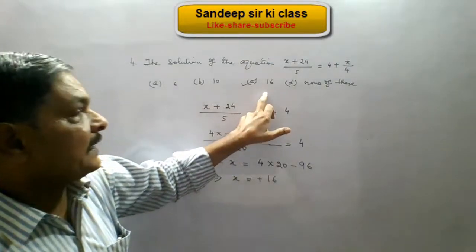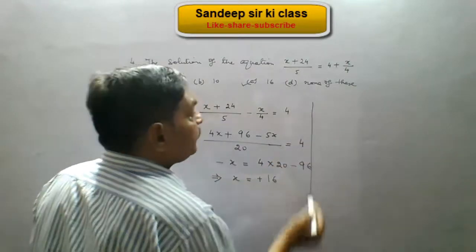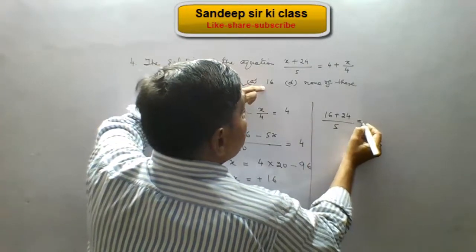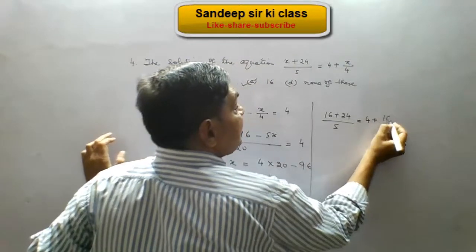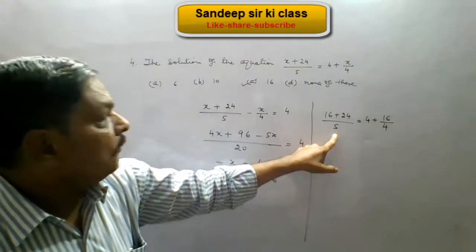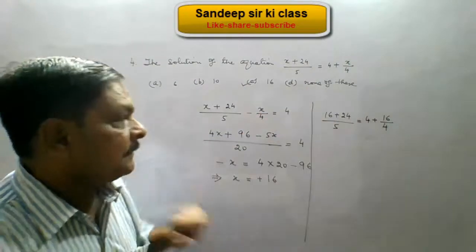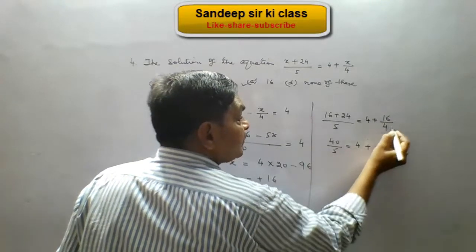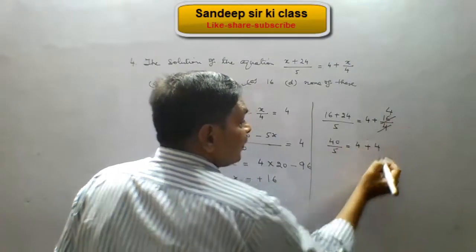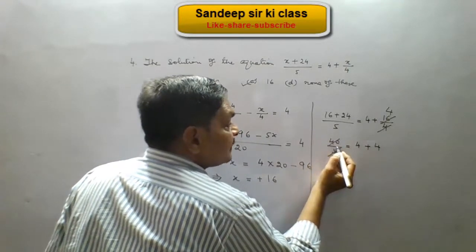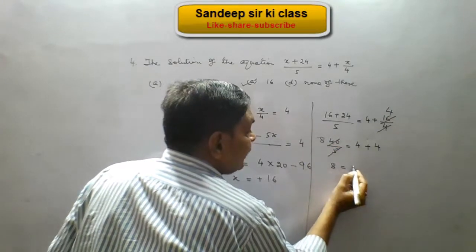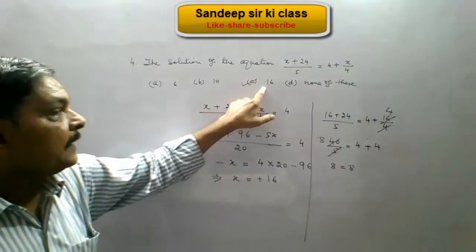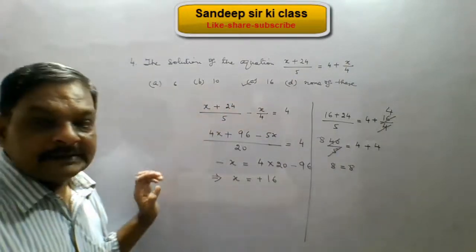Verification: putting x as 16 in the given equation gives (16 plus 24) upon 5 equals 4 plus 16 upon 4. Left hand side is 40 upon 5, which is 8. Right hand side is 4 plus 4, which is 8. So we get 8 equals 8 — left hand side and right hand side are equal, confirming option C with x equals 16 is correct.